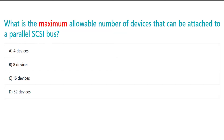What is the maximum allowable number of devices that can be attached to a parallel SCSI bus? A. Four devices. B. Eight devices. C. Sixteen devices. D. Thirty-two devices.